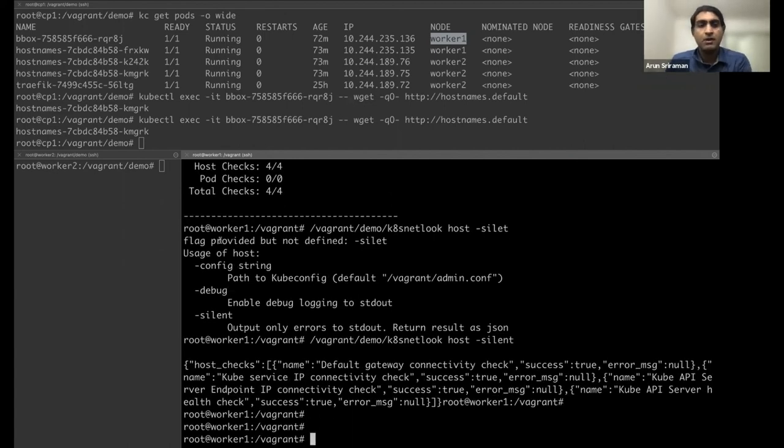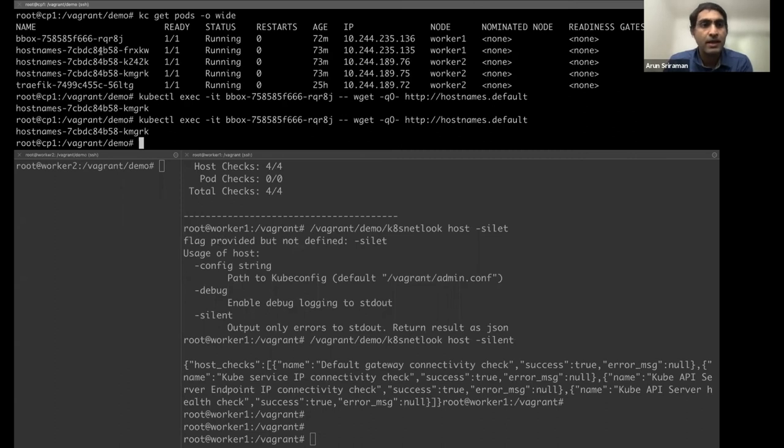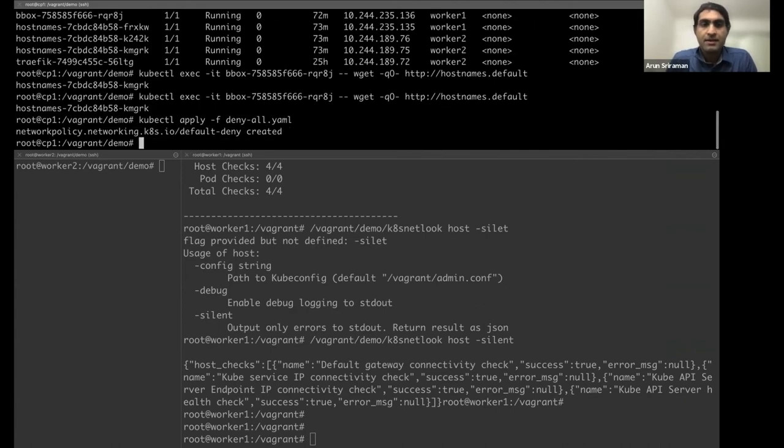You can make it silent to get a JSON blob in case you want to programmatically use it. Now what we'll do, we'll look at a case where there's a problem in the node.